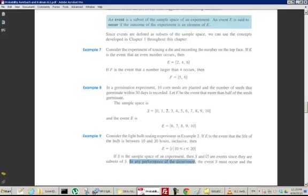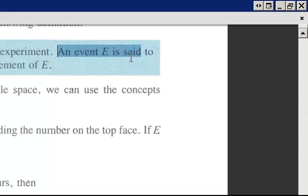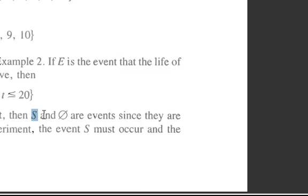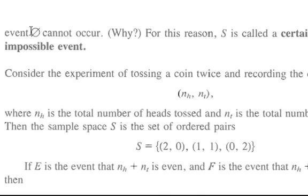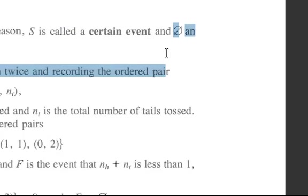If S is the sample space of an experiment, then S and the empty set are events since they are subsets of S. Whenever you perform the experiment, the event S must occur, because an event E is said to occur if the outcome is an element of E — and of course the outcome is always in S since S is the set of all possible outcomes. The empty set cannot occur because there's nothing in it. For this reason, S is called a certain event, and the empty set is called an impossible event because it cannot happen.